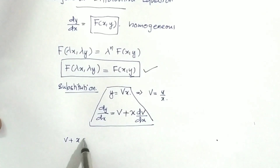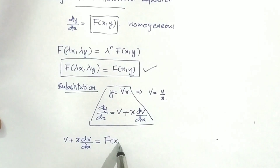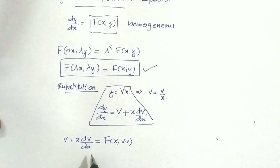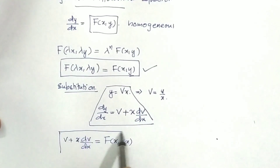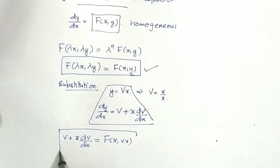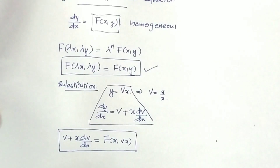After substitution, we get v plus x dv/dx equal to f(x, vx). Simplifying this gives us a variable separable form. We use the variable separable method to solve the resulting differential equation.